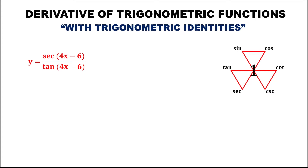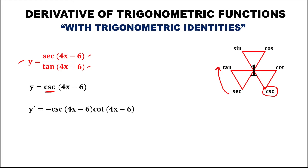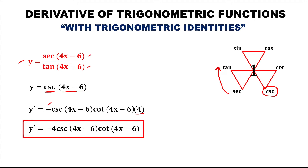For the next given, using this figure, the ratio of two functions is the function before them. We have secant over tangent, and the function before them is cosecant. So this equals y equals cosecant 4x minus 6. The derivative of cosecant is negative cosecant times cotangent, times the derivative of 4x minus 6, which is 4. This becomes y prime equals negative 4 times cosecant times cotangent.